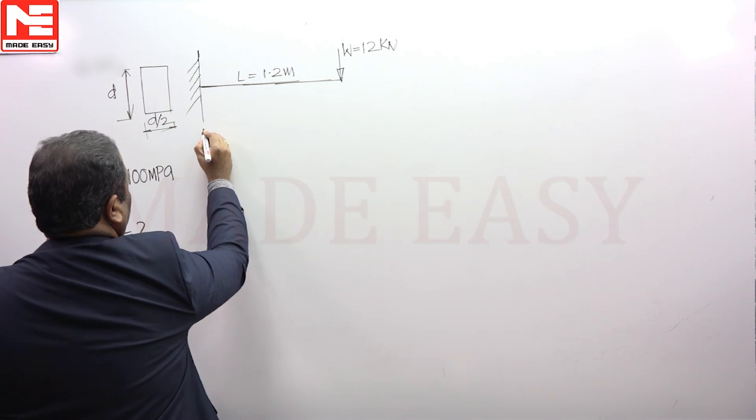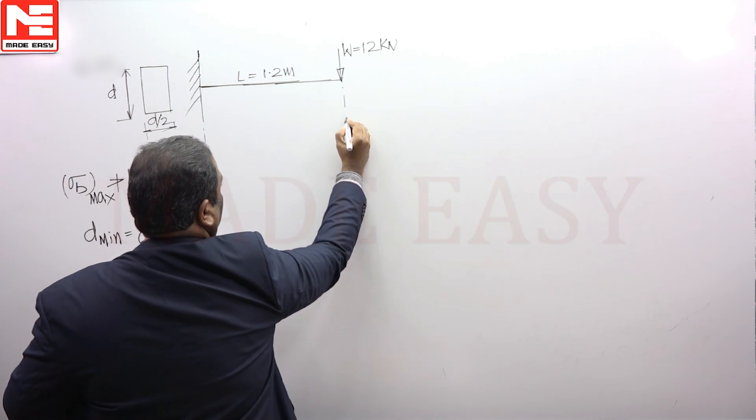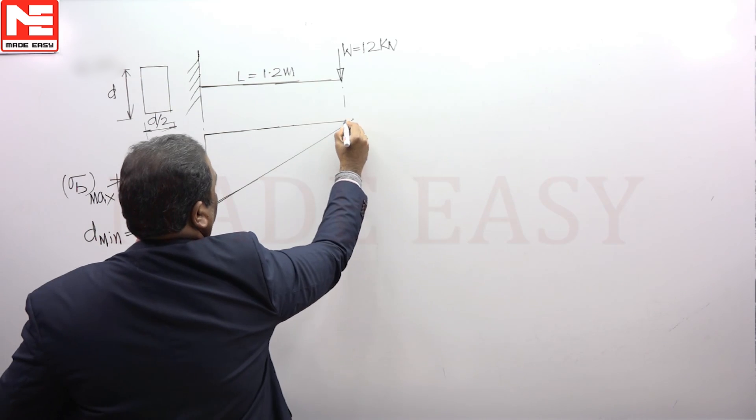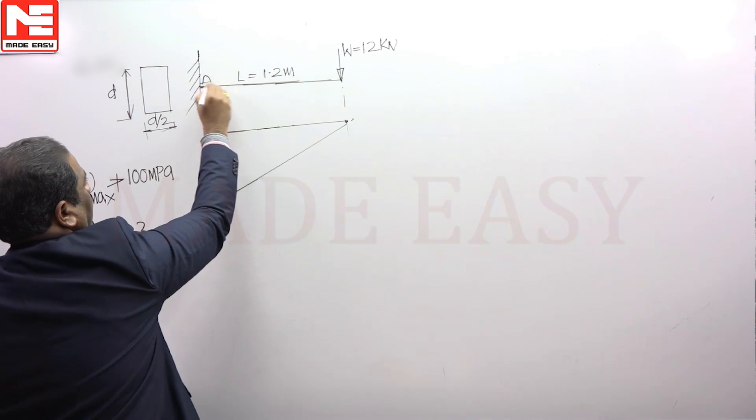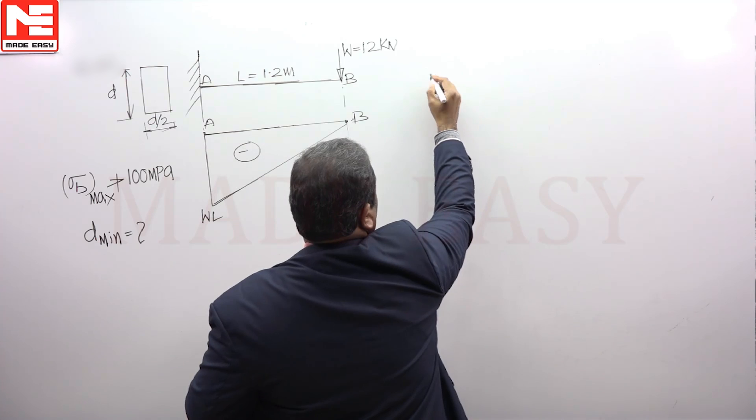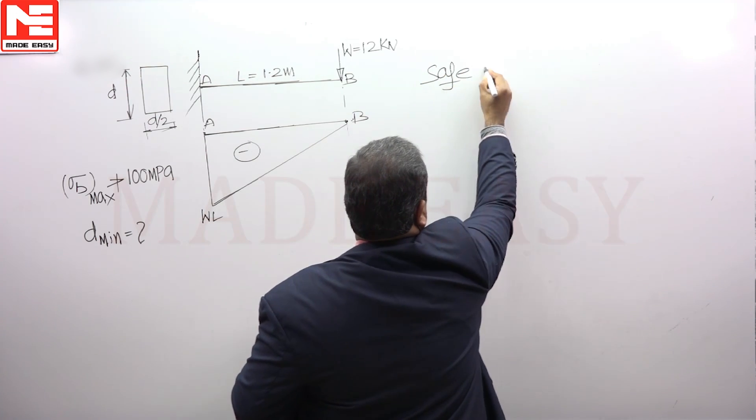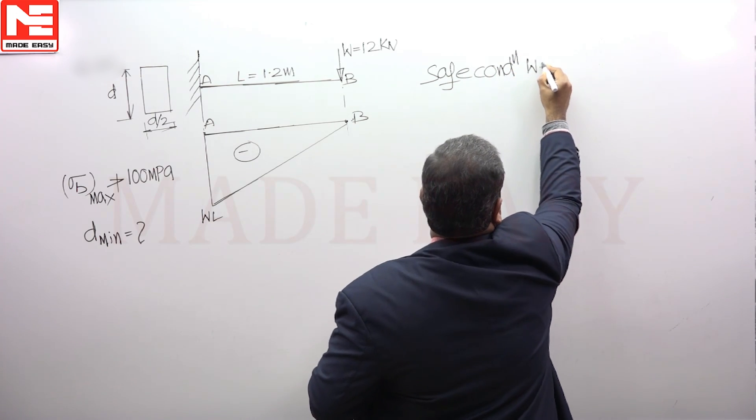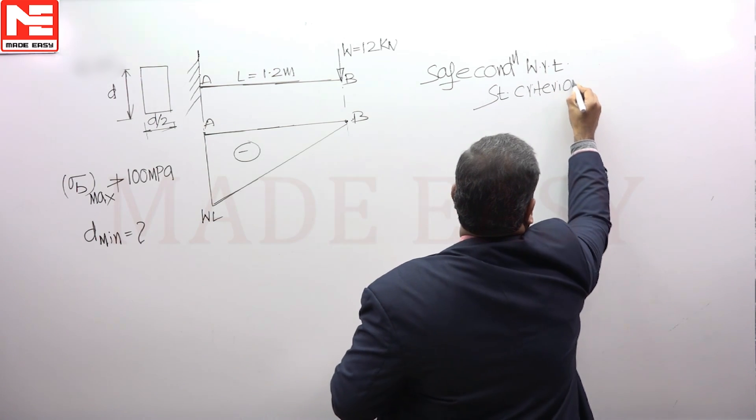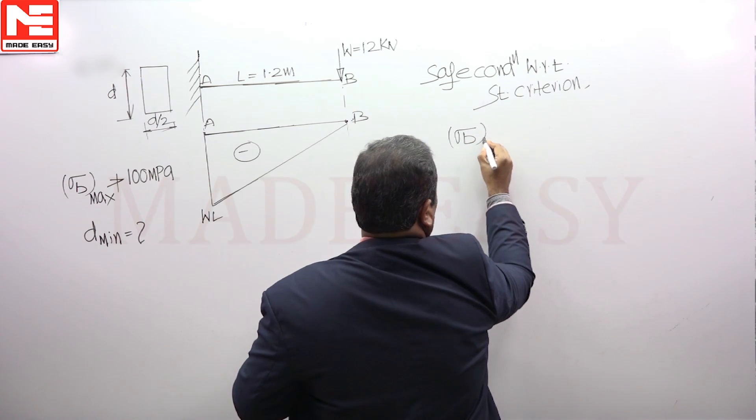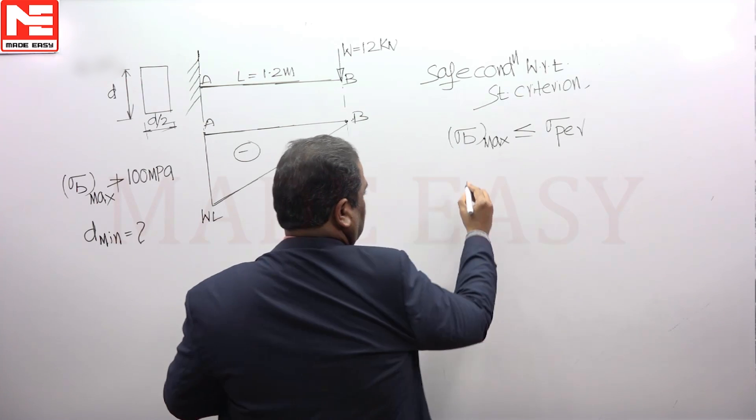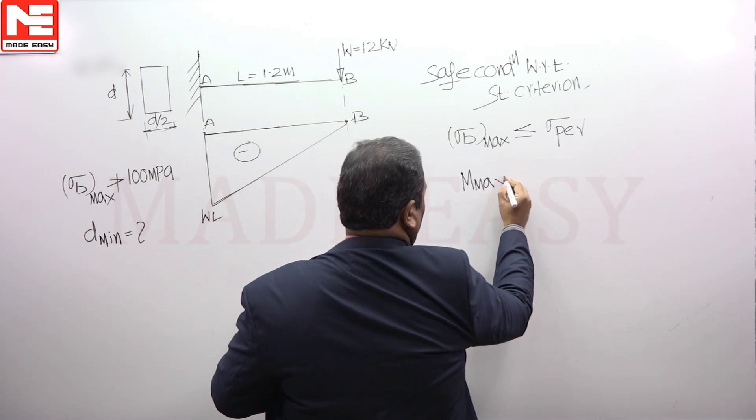If you can draw the bending moment diagram, the maximum bending moment will be W into L. By using the strength criterion safe condition with respect to strength criterion, maximum bending stress should be less than or equal to permissible stress. The maximum bending stress can be calculated by M max divided by section modulus.